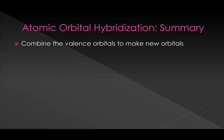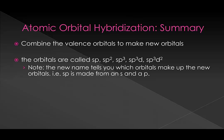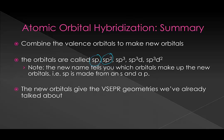We're combining valence orbitals to make new orbitals that stay within an atom, and these have names based on the orbitals they come from. If you combine an s orbital and a p orbital, you get sp orbitals. If you combine one s orbital and two p orbitals, you get sp2 orbitals, and so on. The number of new orbitals you create gives you the VSEPR geometries.